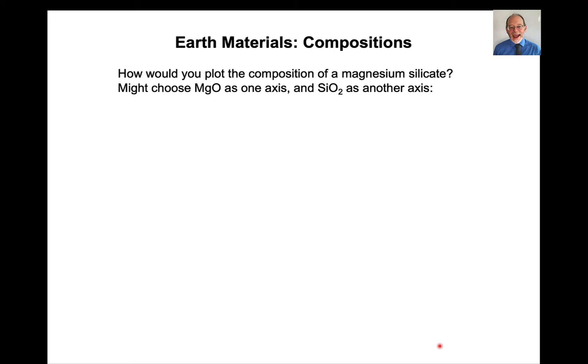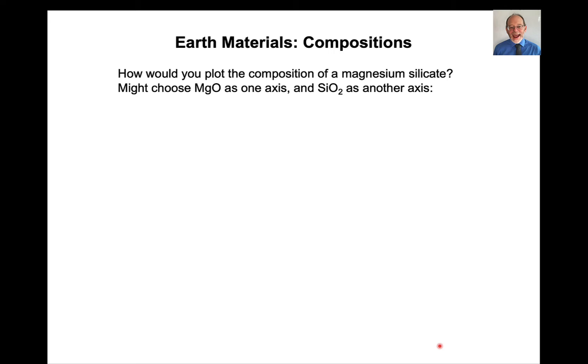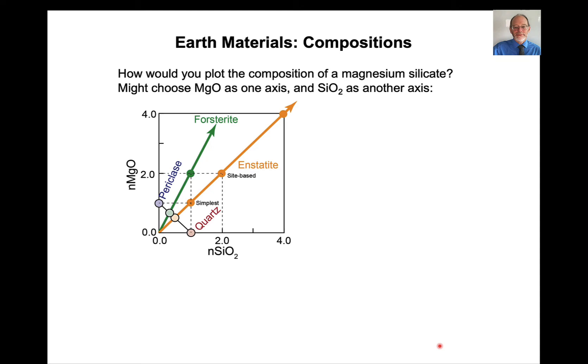So the first question is how would you plot the composition of a magnesium silicate? The first thing I would think of is you might choose magnesium oxide on one axis and silicon dioxide SiO2 as another axis. And we can do that. Here for example is the number of moles of magnesium oxide, here is the number of moles of SiO2.